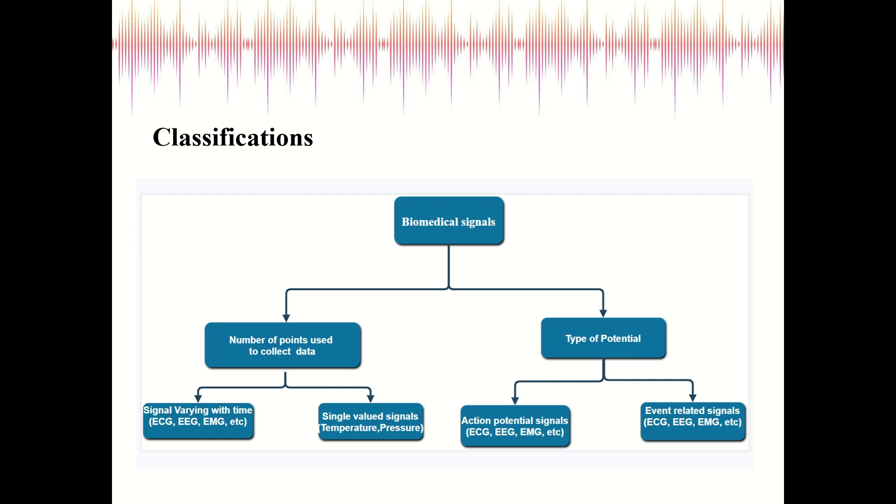For single valued signals, we have temperature and blood pressures. These are signals like many times we see the blood pressure, temperature of our body, and sugar level. These are the types of single valued signals.